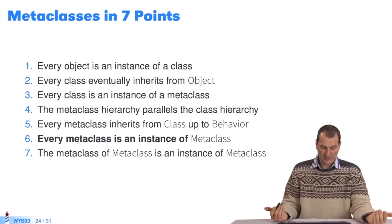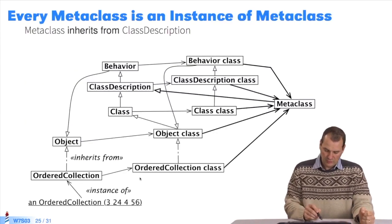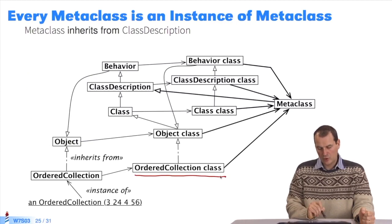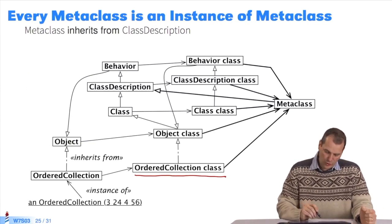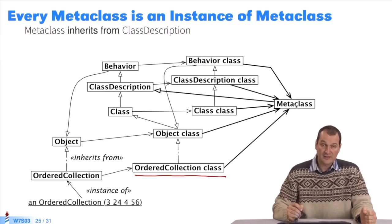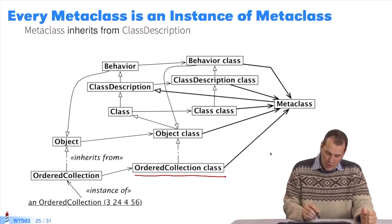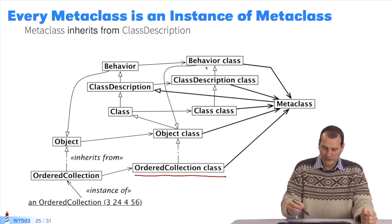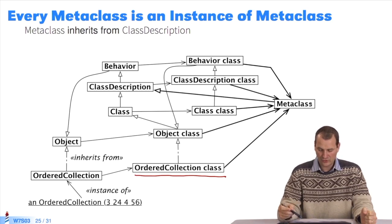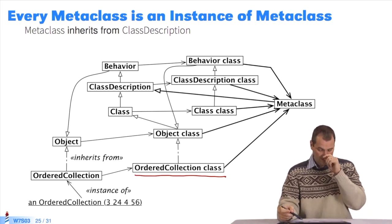Now for the second to last point. Since every class is an instance of a metaclass, a question arises. What is ordered collection class an instance of? Since everything is an object in Pharo, ordered collection class is therefore an instance of metaclass. Object class and class class are instances of metaclass. All the metaclasses in the system are instances of metaclass.